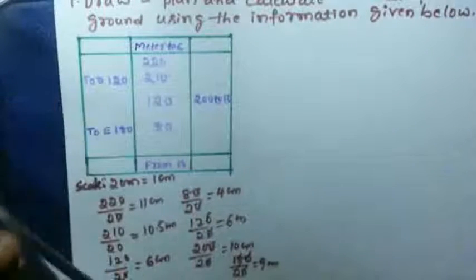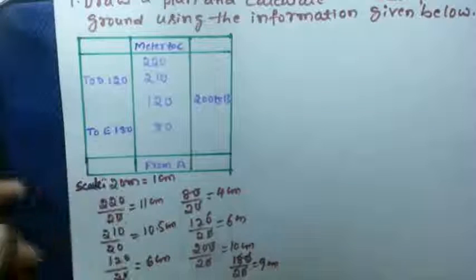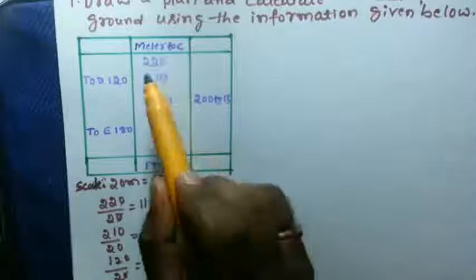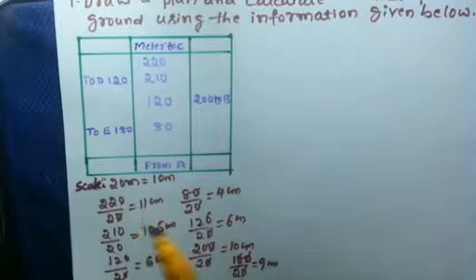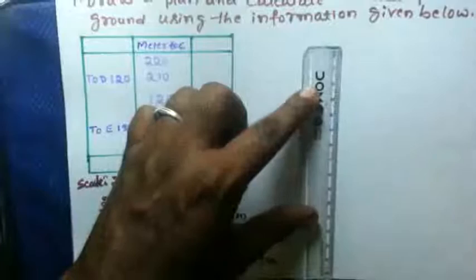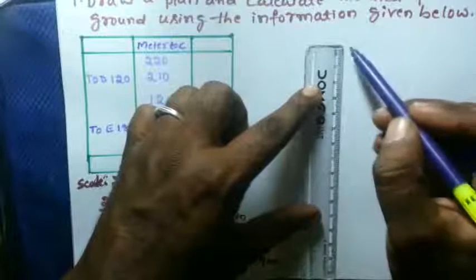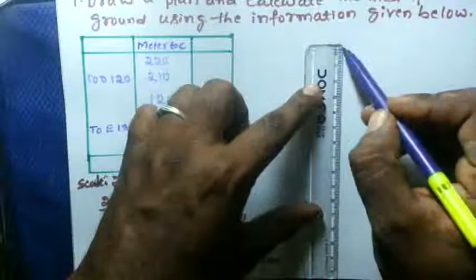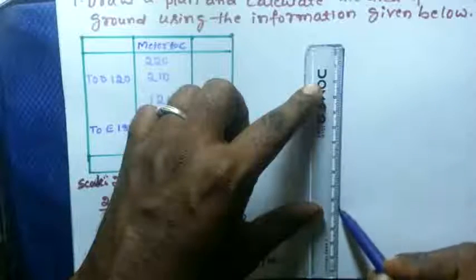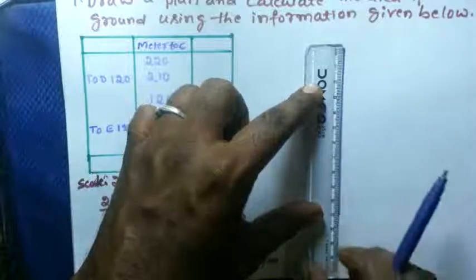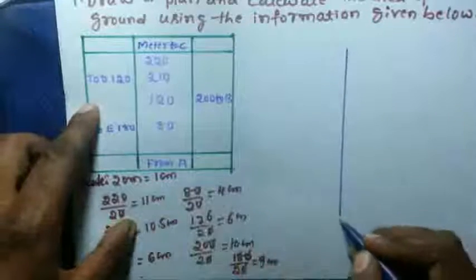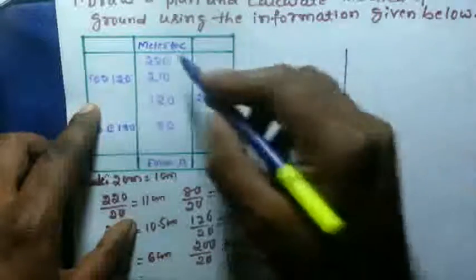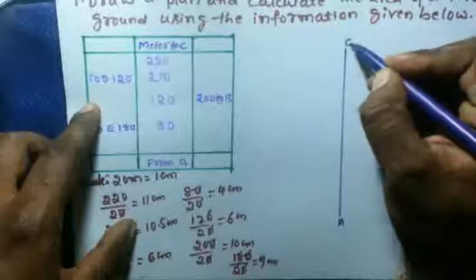Now you can draw a scale drawing for this. First take 220, 220 measurement is 11 centimeter. First draw a line of 11 centimeter by using scale. Give it a name, here they given from A, give it here for this, and to C, give it to C.